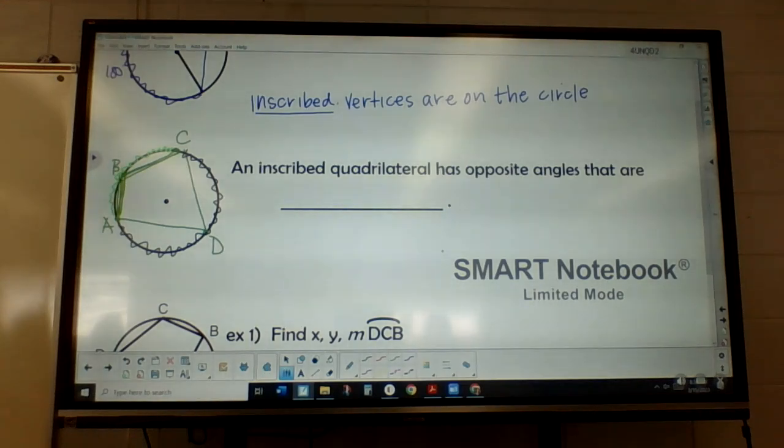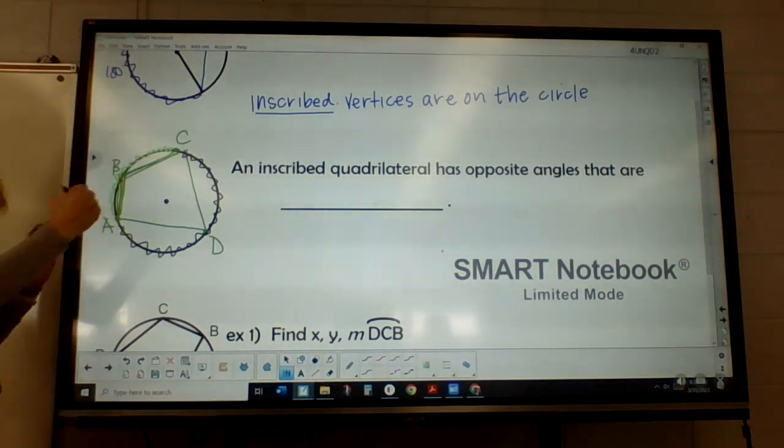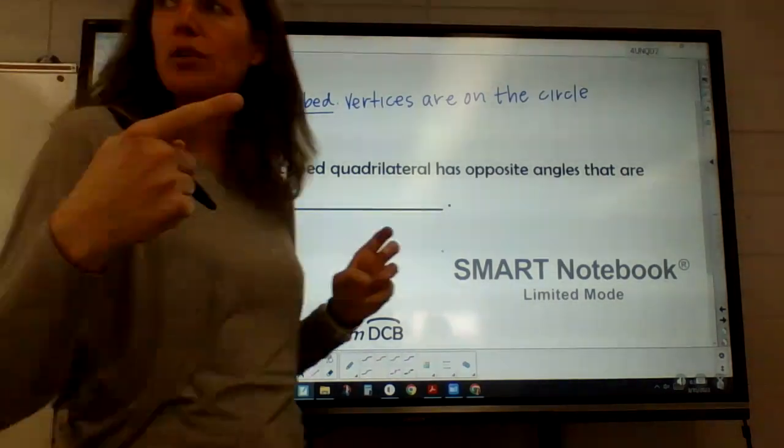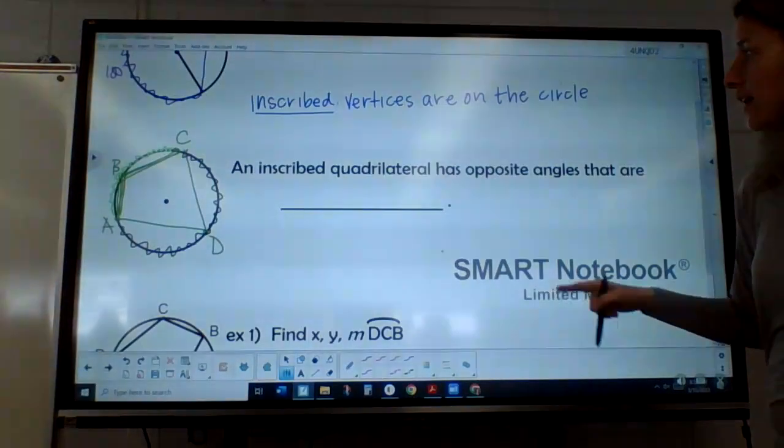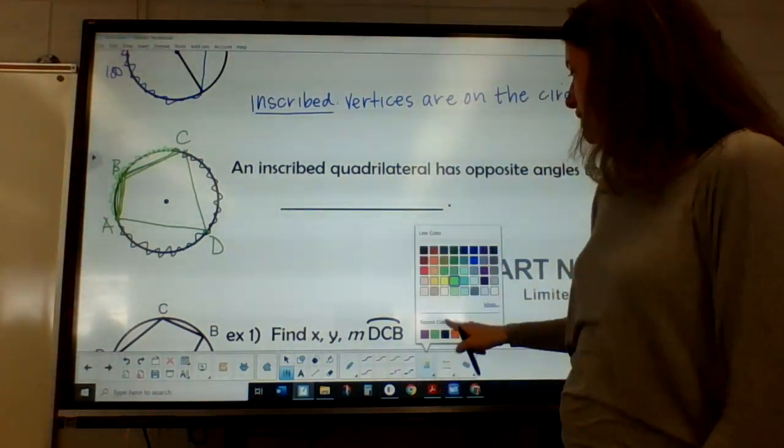So together they should add up to 360 all together. So what does that mean about the angles? What are they going to add up to? So if the two arcs add up to 360, the angles are going to add up to what? 180. So the opposite angles are going to be supplementary.